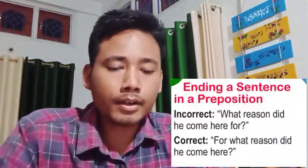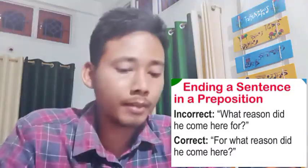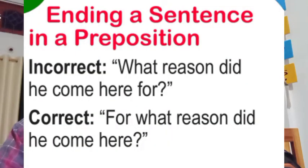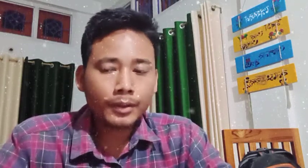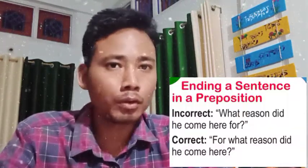Number one: we often end a sentence in a preposition, either in a hurry or out of ignorance. For example, as you can see on the screen: 'What reason did he come here for?' This is the wrong way to end a sentence — you don't have to end a sentence in a preposition. The correct version will be: 'For what reason did he come here?' Please avoid this kind of mistake, especially in English literature.